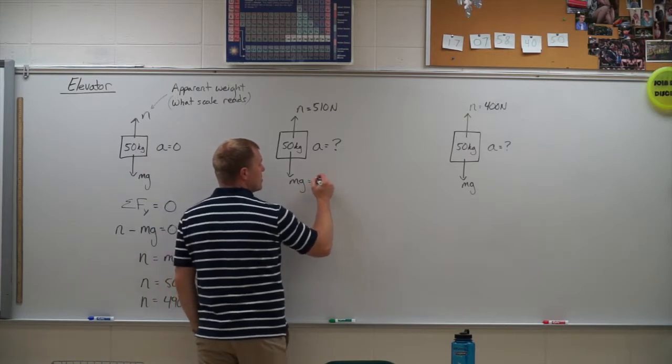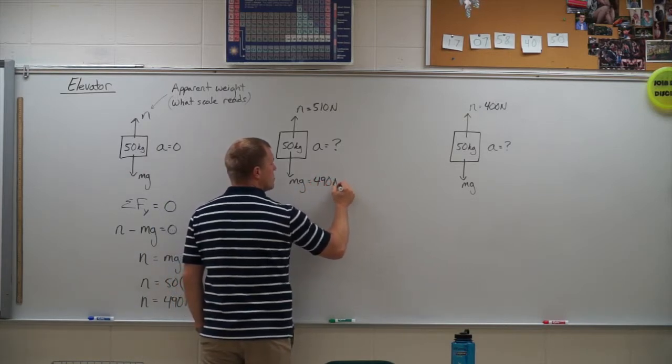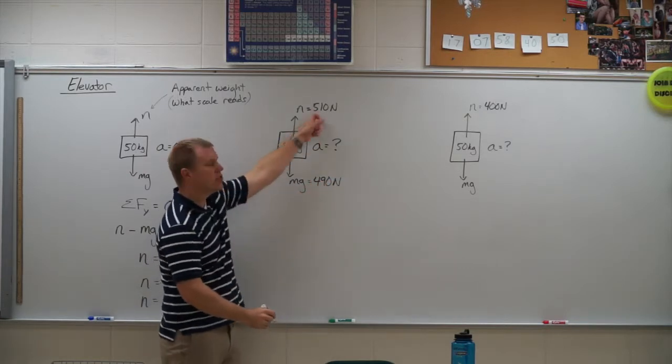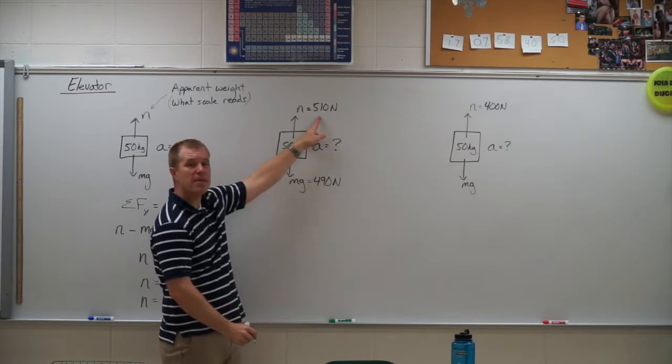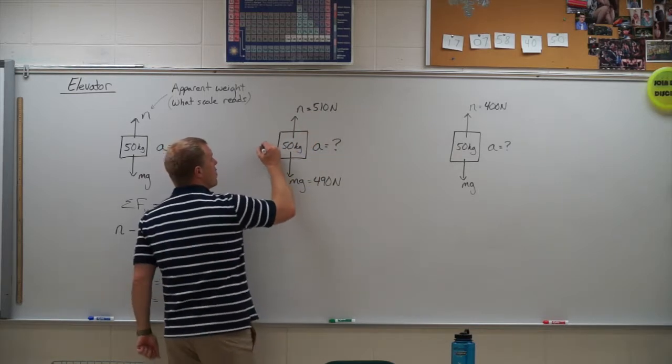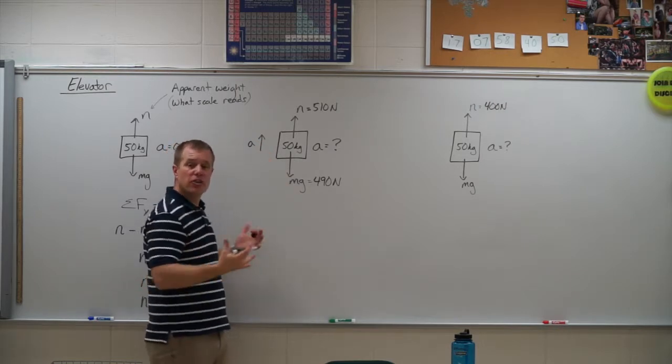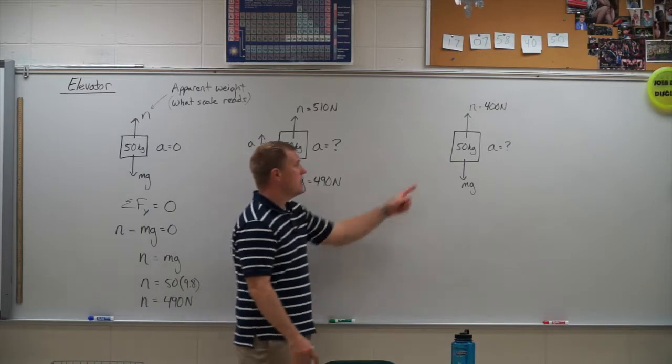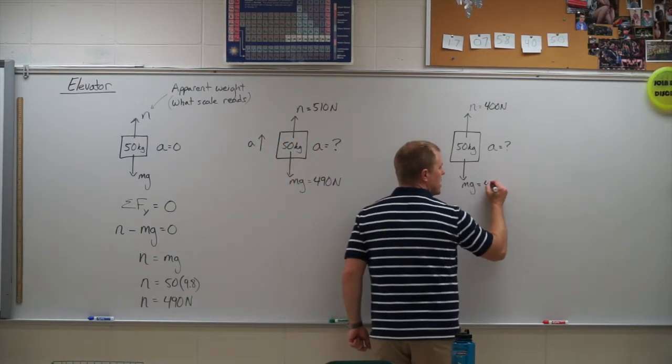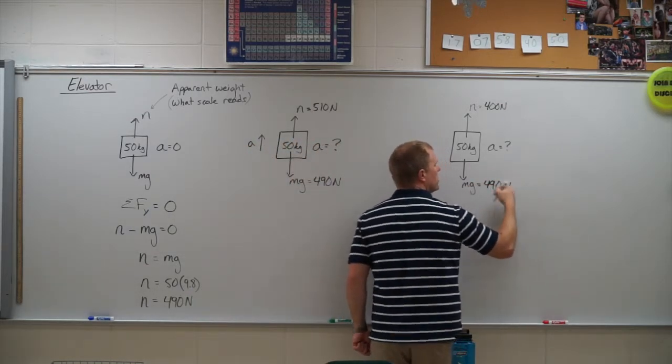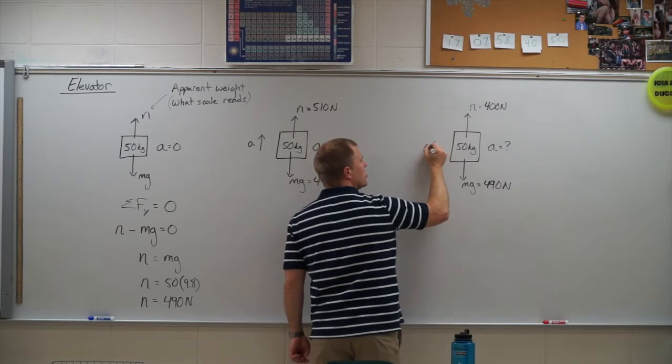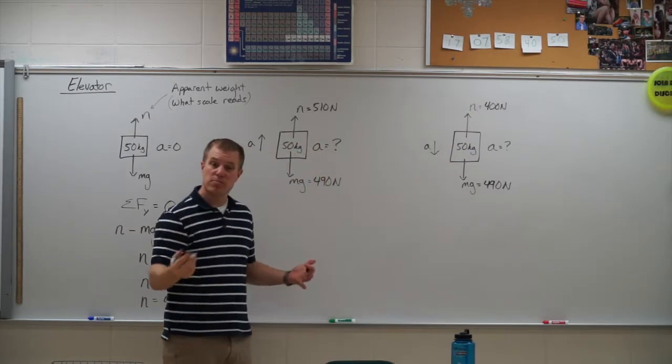Now an easy way to think about this is the weight is 490 newtons. Which force is larger? The normal force. So that means my acceleration in this case is going to be up. The acceleration is always in the direction of the larger of the two forces in these problems. So in this case, I have 490 newtons down, 400 up. So my acceleration should come out a negative number. It should be going down.